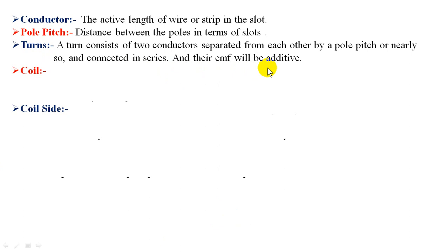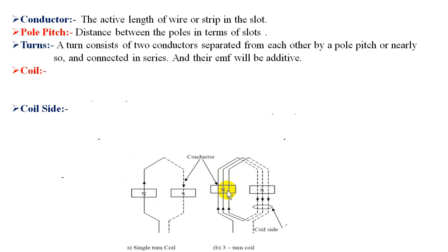For example, this is one turn, and this is three turns — you can see there are three turns in a slot, and they are all connected in series. What is a coil? When one or more turns are connected in series and placed in almost similar magnetic positions, they are called coils. This complete thing is called a single turn coil. A coil may be single or multi-turn.